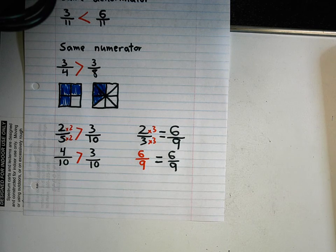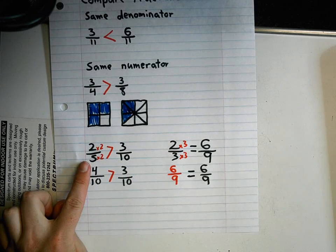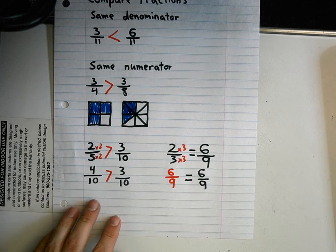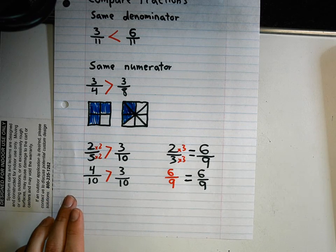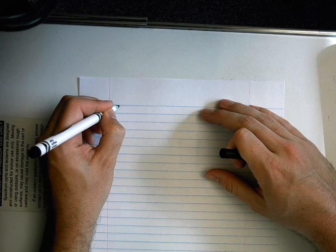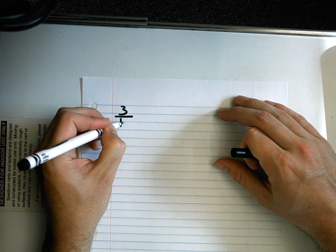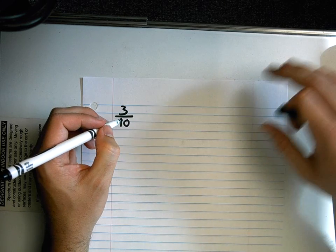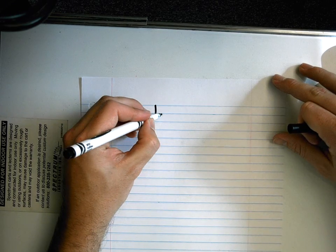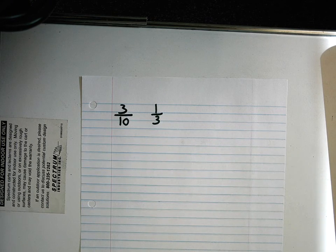Now if every time I could just look at fractions with the same denominator, the same numerator, or ones where I only had to change one of the fractions to figure out which one was greater or less than, that would be way too easy. But unfortunately that isn't always the case. Now I'm going to look at two fractions where I can't just do something to one of them to make the denominators the same. I'm going to look at three tenths and one third.